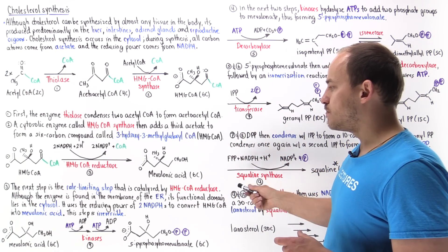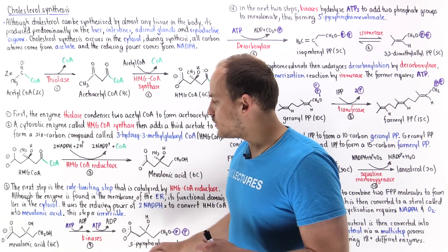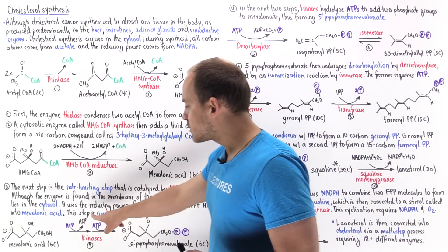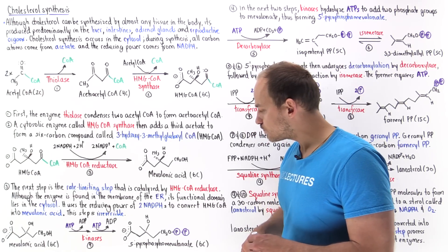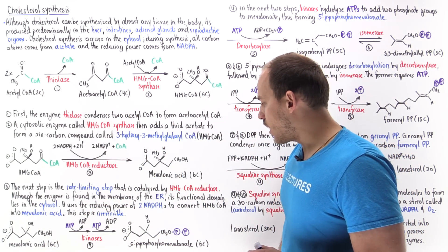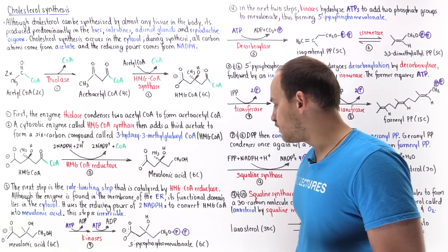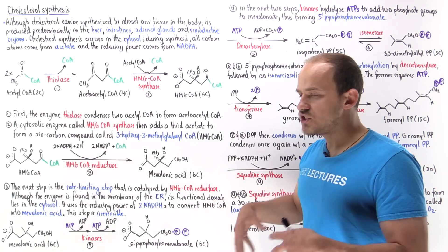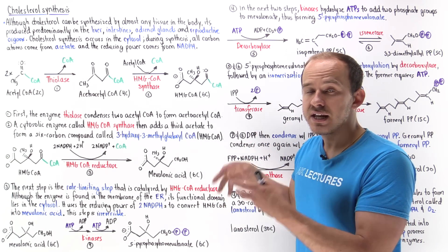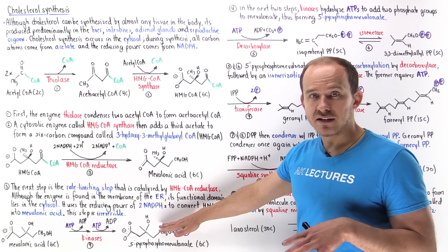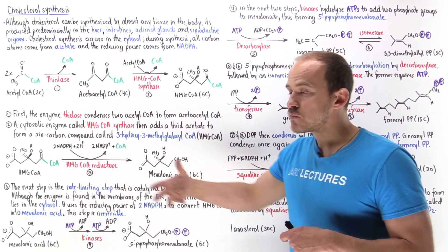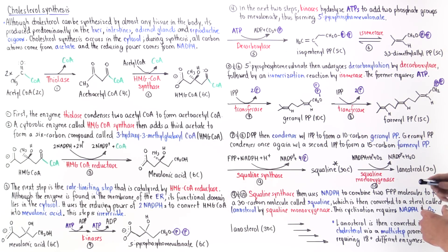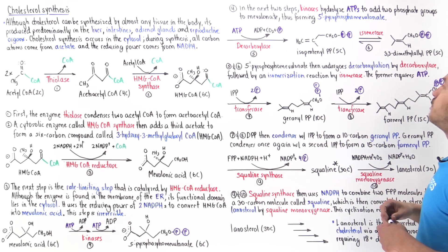Once we synthesize mevalonic acid, a bunch of kinases utilize two ATP molecules to attach two phosphate groups onto this carbon, hydrolyzing two ATP molecules. We convert the mevalonic acid — a six-carbon molecule — to a different six-carbon molecule known as 5-pyrophosphate mevalonic acid. The entire point of adding these two negatively charged phosphate groups is to make this molecule more hydrophilic and water-soluble so it can dissolve in the cytoplasm of the cell.